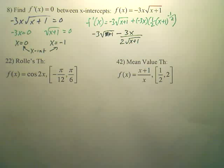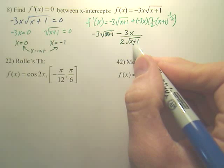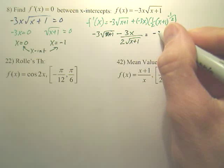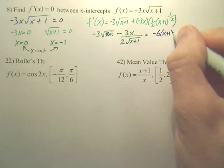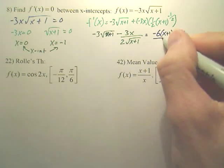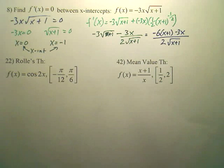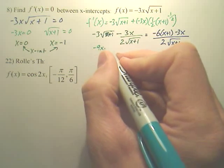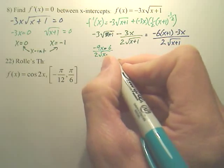minus three x over two square root x plus one. And when you want to set this equal to zero, this is a good practice one. You have to multiply top and bottom by two square root of x plus one. So this becomes negative six x plus one minus three x over two square root x plus one. And when you do all that, you get negative nine x minus six over two square root x plus one.